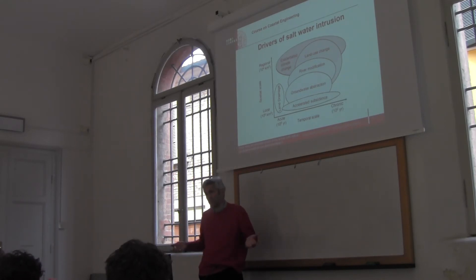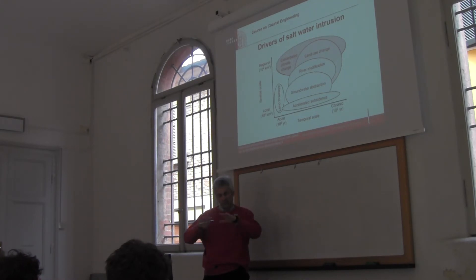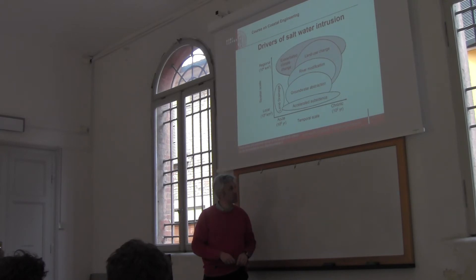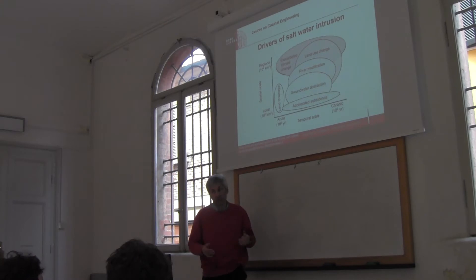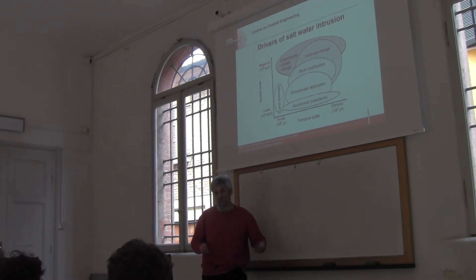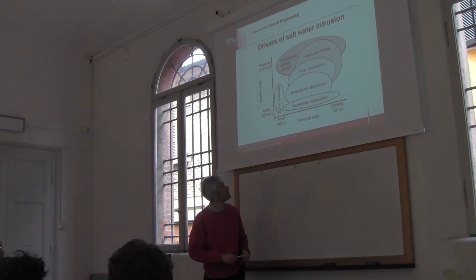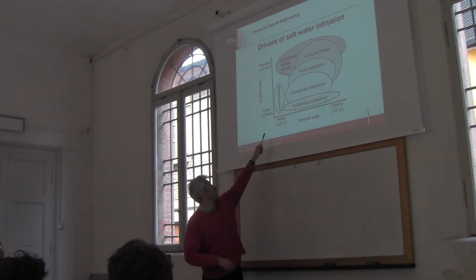If you move a river, you move and change the dynamics of the underground aquifers and groundwater. Land use change: if you urbanize a region, you decrease infiltration. If you decrease infiltration, there is less fresh water flow. And land drainage has the same effect.